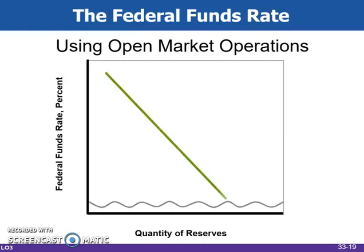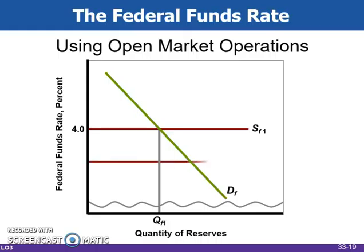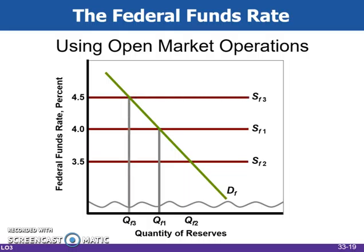In this example, we are assuming that the Fed desires a 4% interest rate. The demand curve is downward sloping because lower interest rates give banks greater incentives to borrow. The supply curve for the Federal Funds is horizontal at the desired rate because the Fed uses open market operations to manipulate the supply to keep it there.